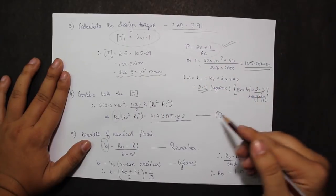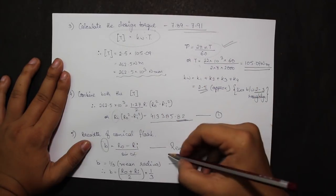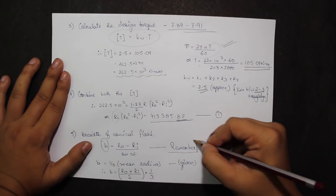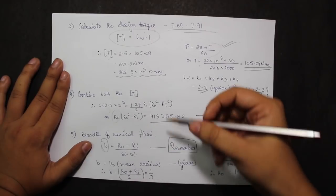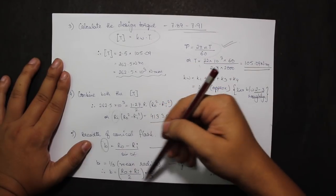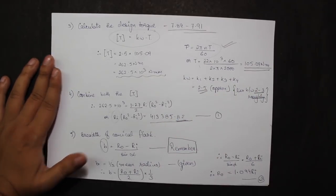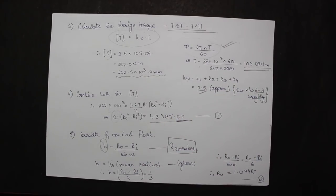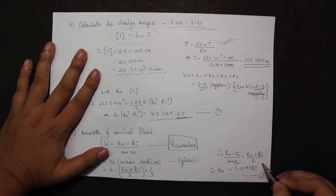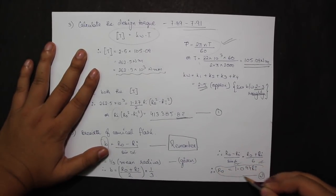Now while reading the question I came across a figure called B. B is given by r0 minus ri divided by sin alpha, which has to be remembered. Also my B was supposed to be equal to the mean radius divided by 3. Mean radius would be r0 plus ri divided by 2 into 1 by 3. Equating both of these equations, I get r0 is equal to 1.094 times ri.